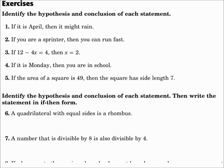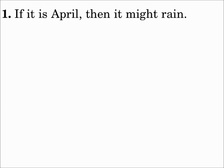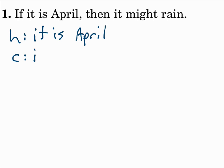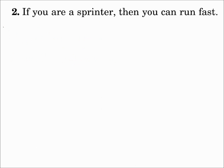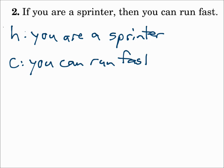Identify the hypothesis and conclusion of each statement. Number one: if it is April, then it might rain. The hypothesis: it is April. The conclusion: it might rain. Remember, hypothesis is after 'if,' conclusion is after 'then.' Number two: if you are a sprinter, then you can run fast. The hypothesis: you are a sprinter. The conclusion: you can run fast.